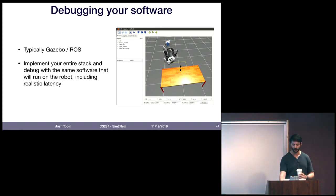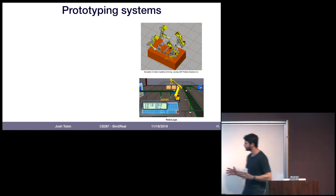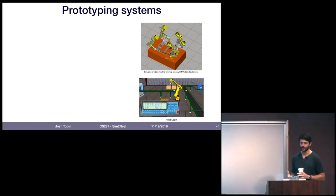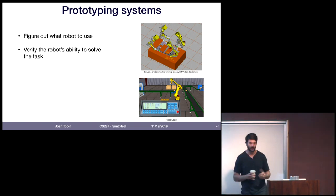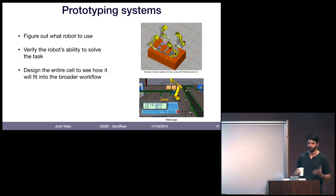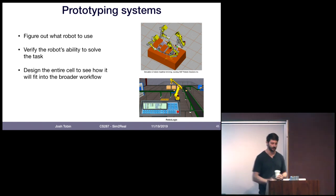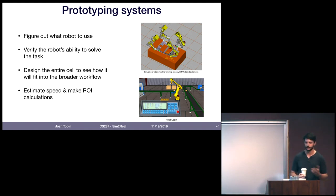Another use case common in industrial robotics is prototyping entire systems. If you have a task you want your industrial robot to solve, you need to figure out which robot to use, make sure it can solve the task before you buy it and invest the effort in installing it, and design the entire cell and workflow. You can prototype all of that much faster in simulation, and test how long things are going to take and make ROI calculations before investing in expensive robots.